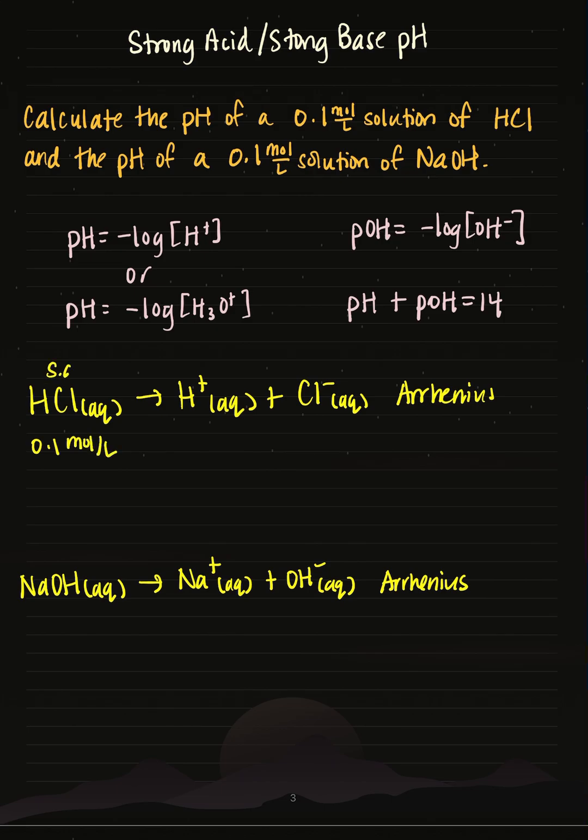So HCl is a strong acid, so that means it will fully dissociate into its ions H plus and Cl minus. So if it fully breaks down, that means I also have 0.1 moles per liter of H plus.